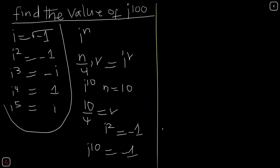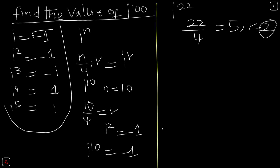Let's take another example: i raised to the power of 22. This becomes 22 divided by 4, which gives us a quotient of 5 and a remainder of 2. What we are only interested in is the remainder, so this becomes i raised to the power of 2, which is the same as negative 1.